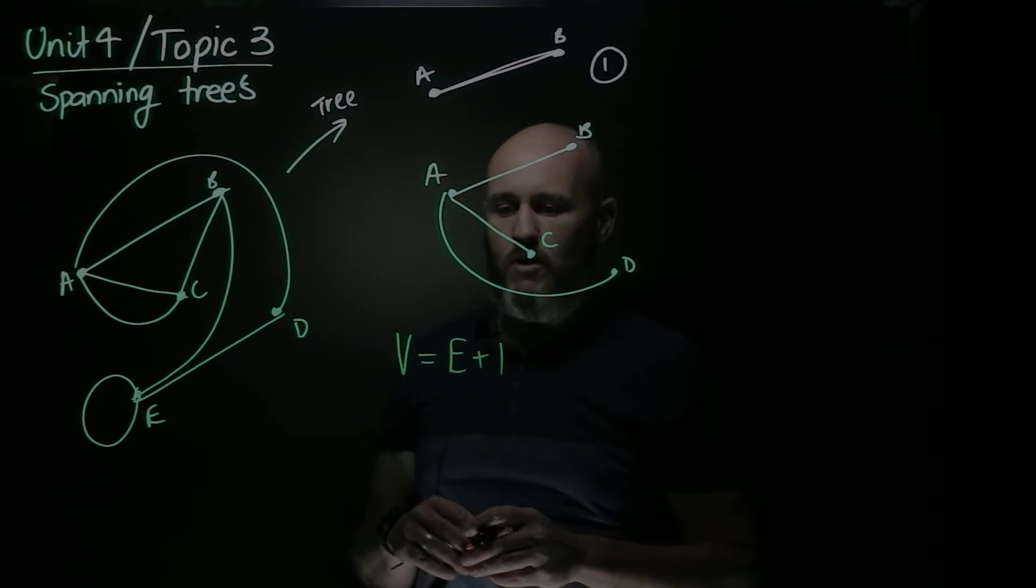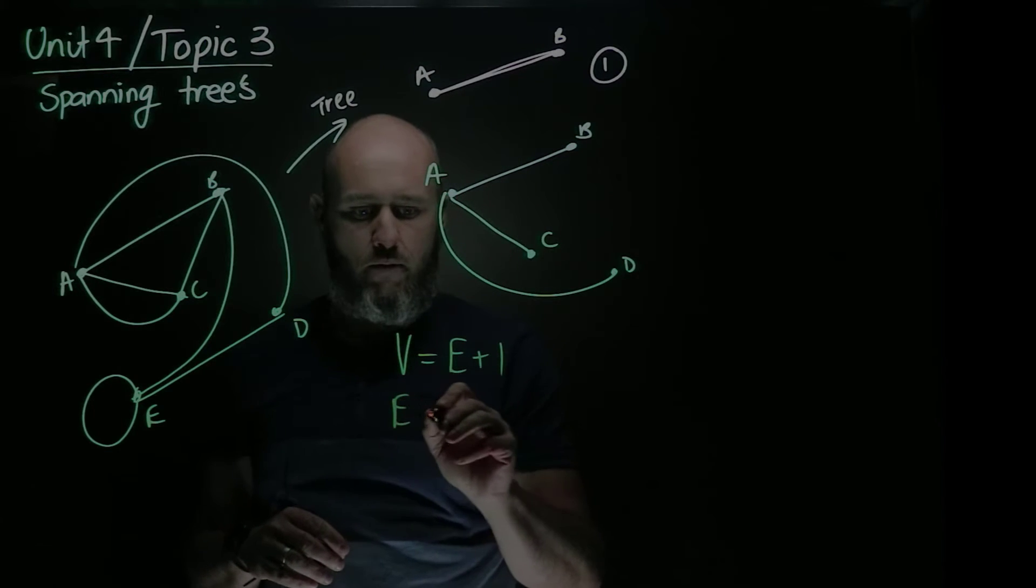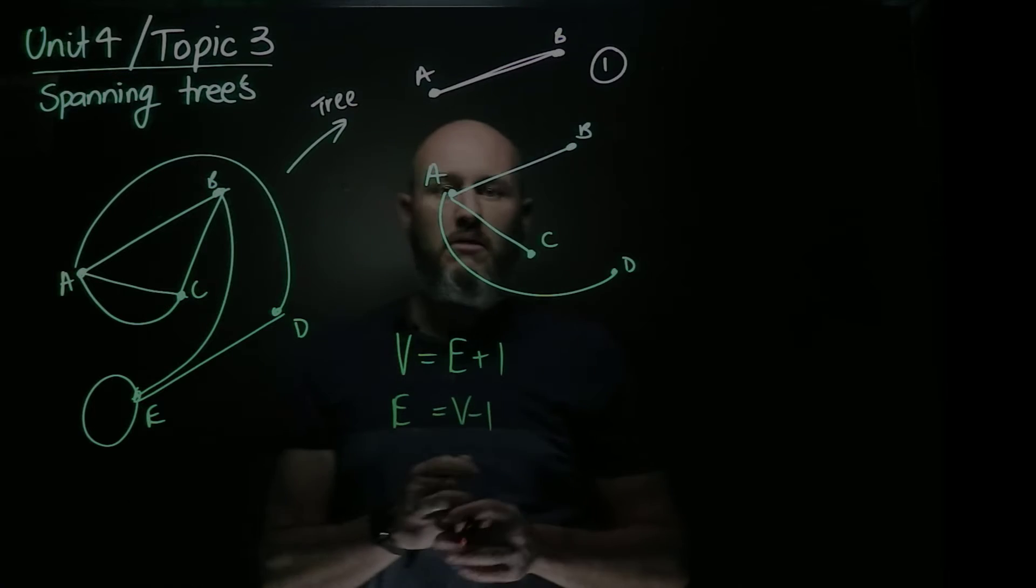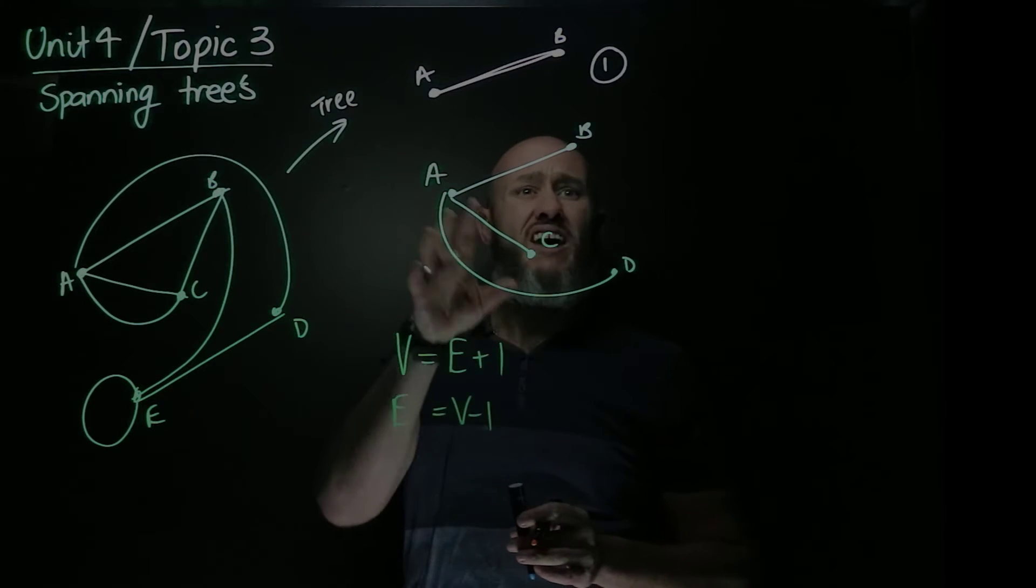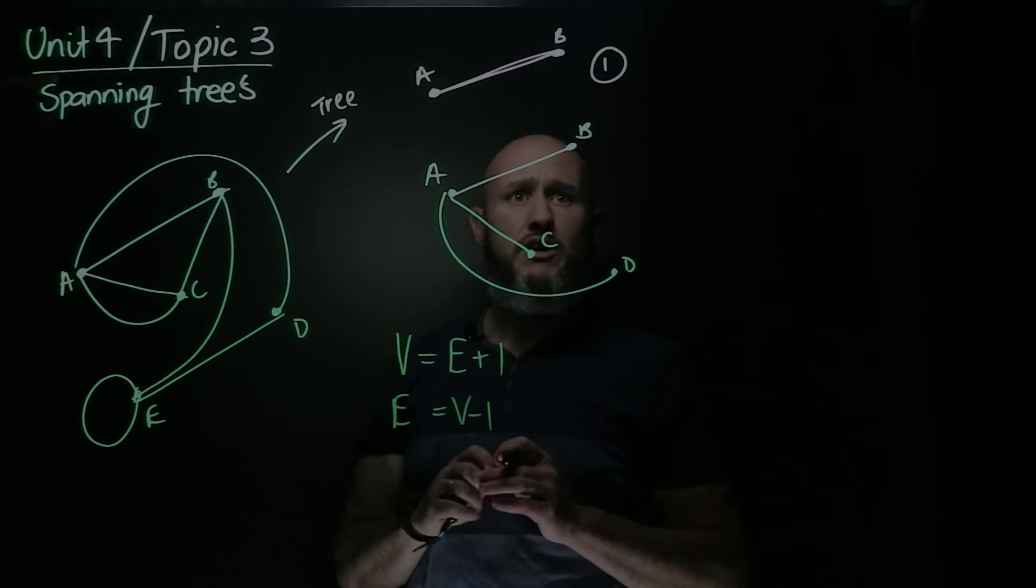So if I've got four vertices in my tree, I have to add three edges. Three edges will connect it right up.